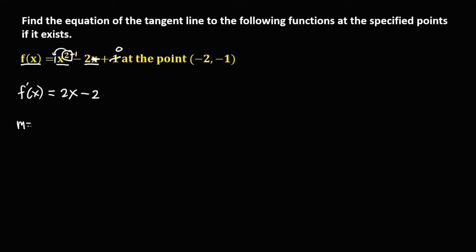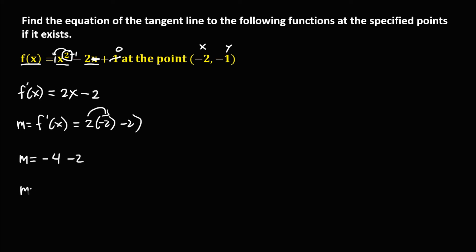To find the slope, since the slope equals the derivative of the function, we have 2x minus 2. From the given point, x is negative 2. So m equals 2 times negative 2, which is negative 4, then minus 2. The slope is negative 6.